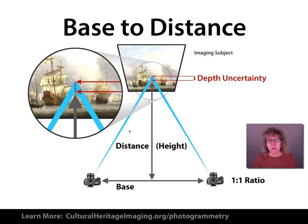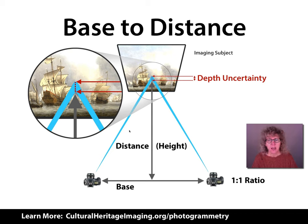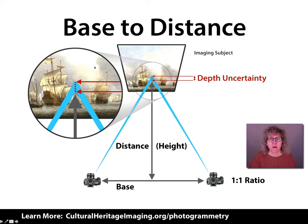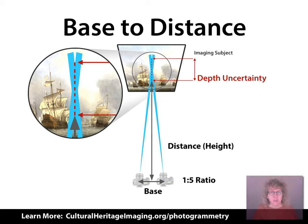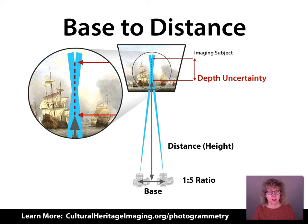Here is an illustration of the base-to-distance concept. The base is how far we move the camera; the distance is how far away we are from the subject. With a one-to-one ratio of base to distance, we get a very low area of depth uncertainty — there are very few places that a point in space can land. If we increase the ratio of base to distance, that increases the depth uncertainty, so there are many more potential places that point could fall on the surface.